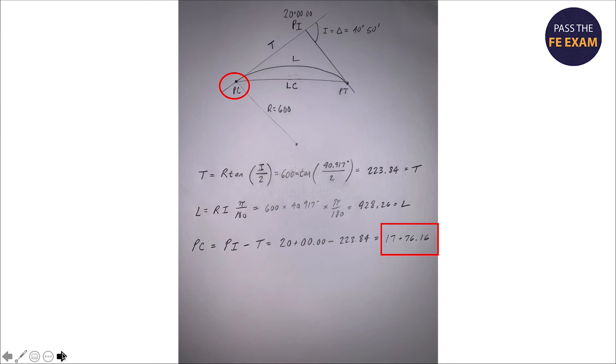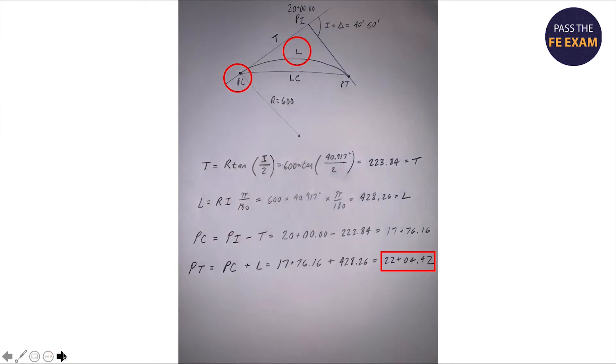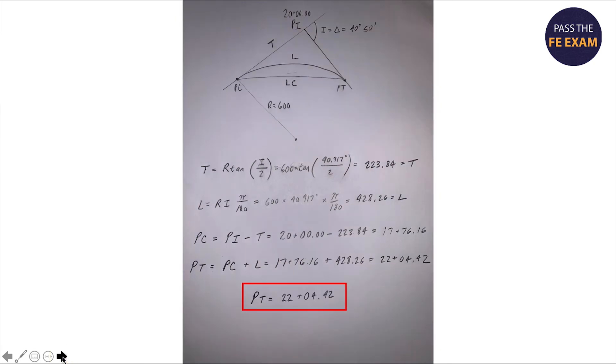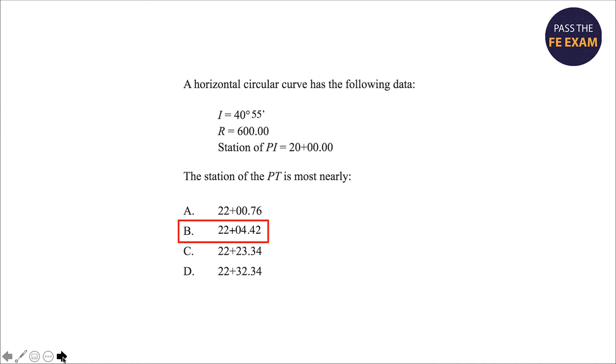Now that we have the PC, we can go ahead and calculate our PT by simply adding the PC to the length of the curve that we previously calculated, which you can see here, which gives us the station of our PT, which is 22 plus 04.42. And that is your answer.